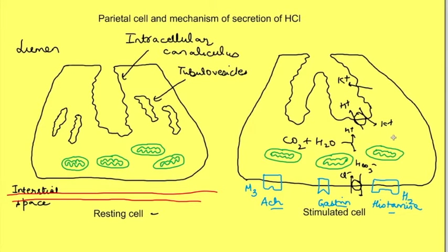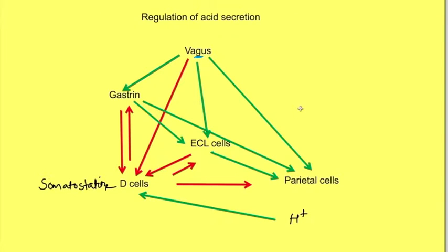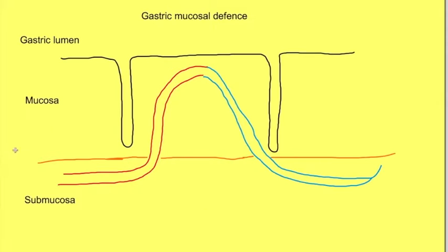We have seen the diagram of mechanism of HCL secretion and regulation of acid secretion in another video. But HCL is an acid and gastric mucosa needs to be protected from its harmful effects. So what are these mechanisms?